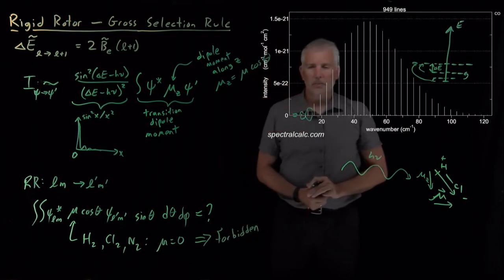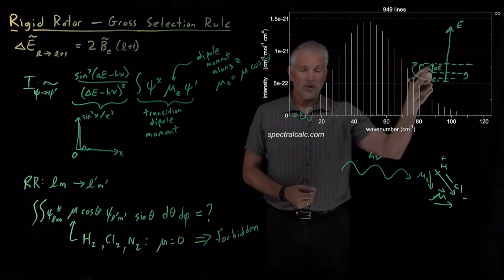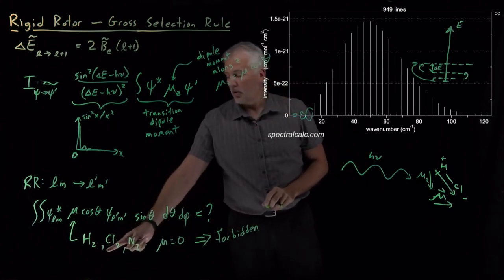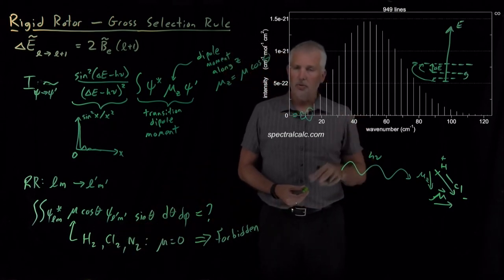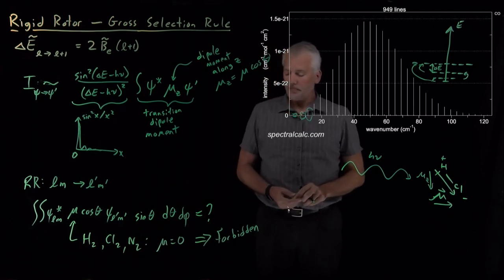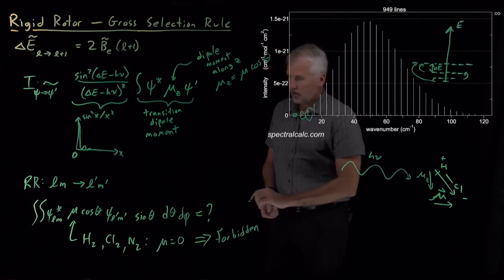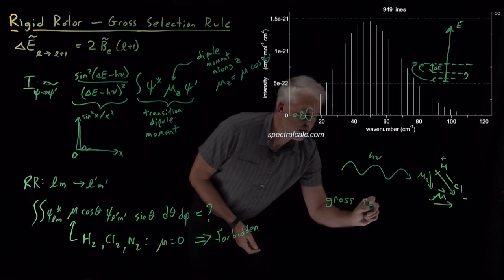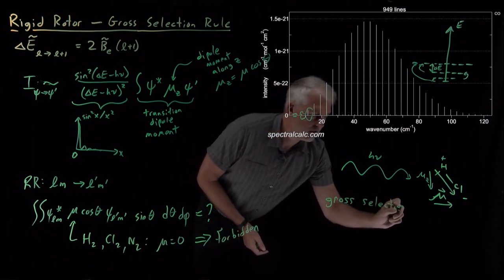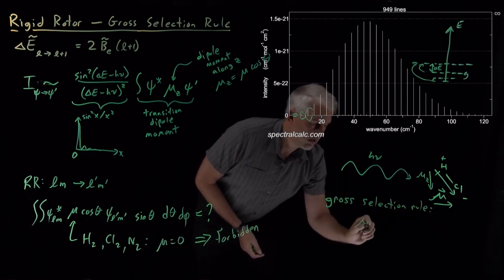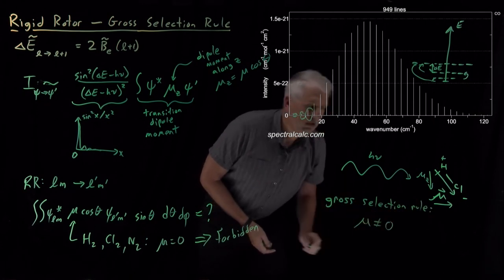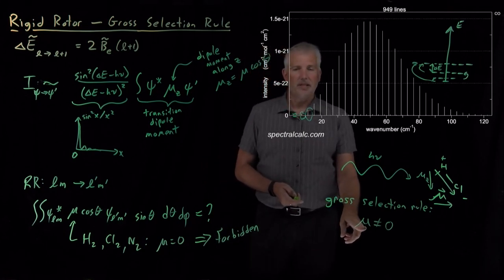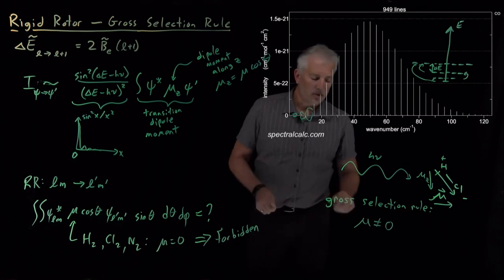Light will not be absorbed in order to cause that transition. Again, it doesn't matter which transition I'm trying to cause, I cannot shine microwave light on a chlorine molecule and cause it to change its rotational motion. That's an example of what we call the gross selection rule.